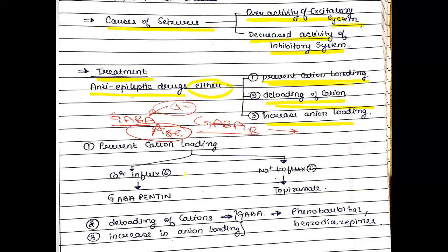To summarize the drug examples: to prevent calcium influx, you can use gabapentin; to reduce sodium influx, topiramate. For de-loading of cations and increase in anion loading through GABA, drugs such as phenobarbital or benzodiazepines can be used to enhance GABA release.